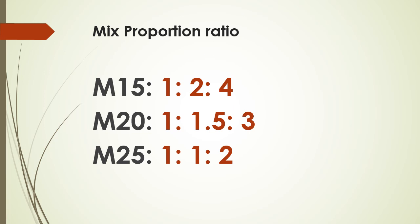Depending on the need, we go for M15, M20, or M25 concrete. In general, M20 is used in regular constructions. The numbers 15, 20, and 25 stand for the characteristic compressive strength of a concrete cube tested at 28 days after proper curing. The compression test is made on a concrete cube after 28 days of curing in water, and that value is taken as the grade value.